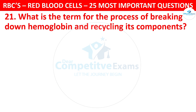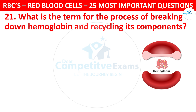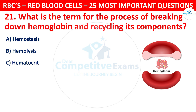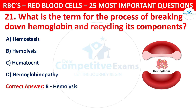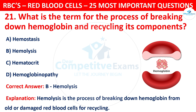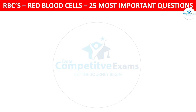Question 21. What is the term for the process of breaking down hemoglobin and recycling its components? Your options are: Hemostasis, Hemolysis, Hematocrit, or Hemoglobinopathy. The correct answer is B, that is Hemolysis. Hemolysis is the process of breaking down hemoglobin from old or damaged red blood cells for recycling.